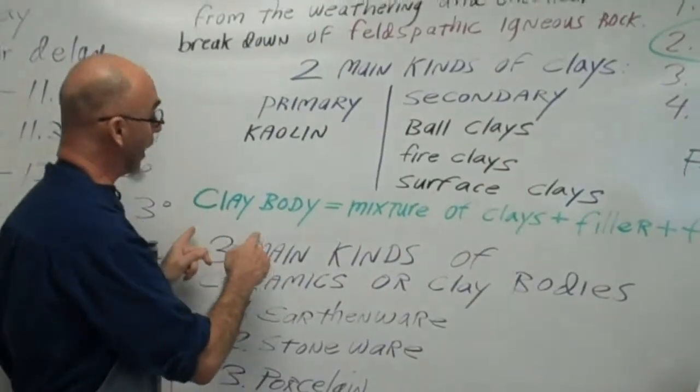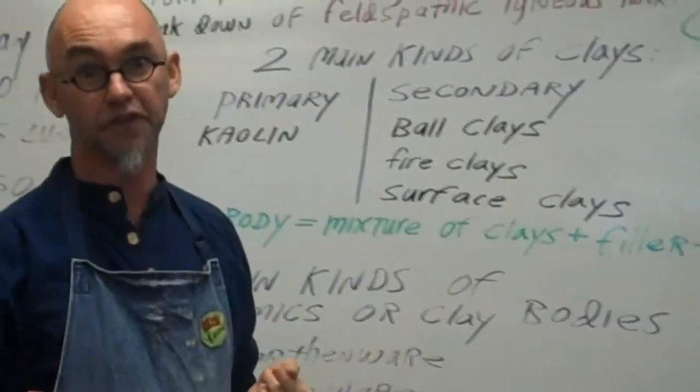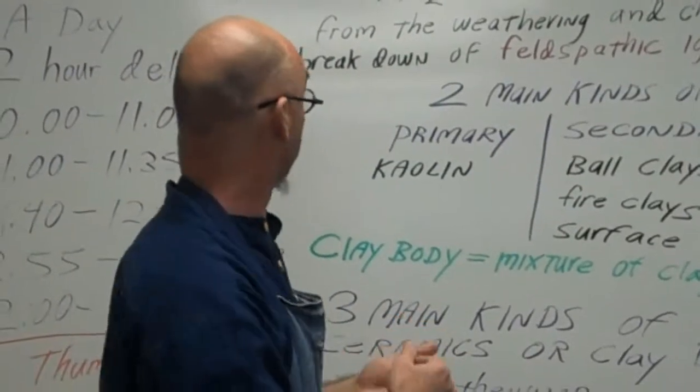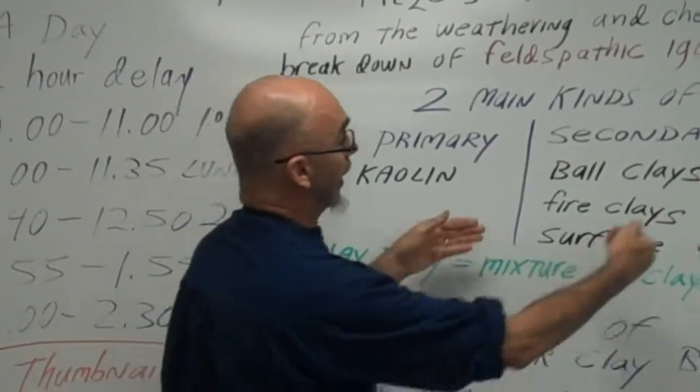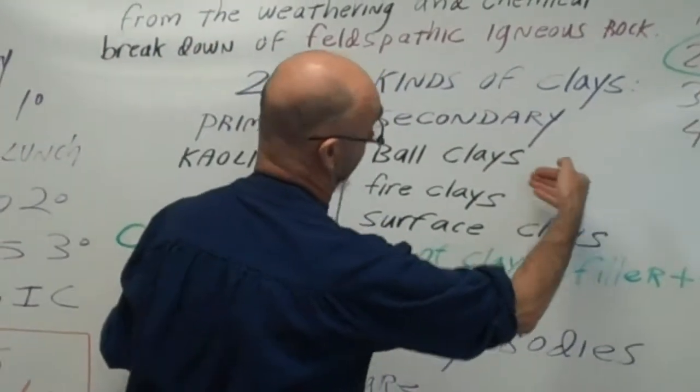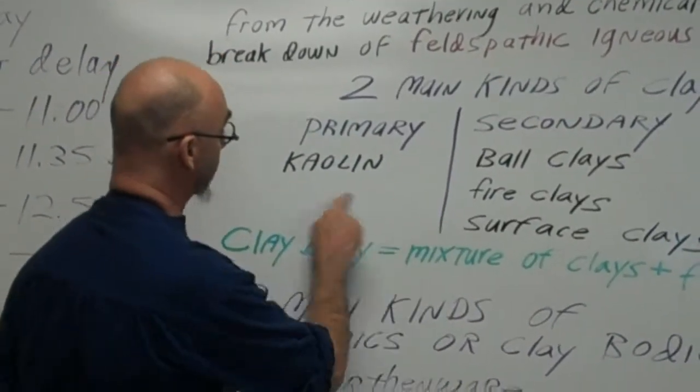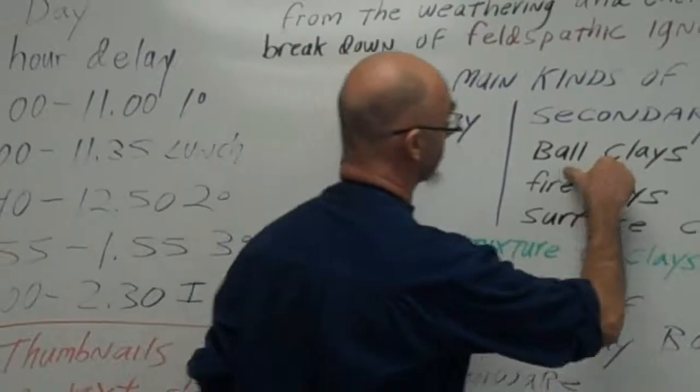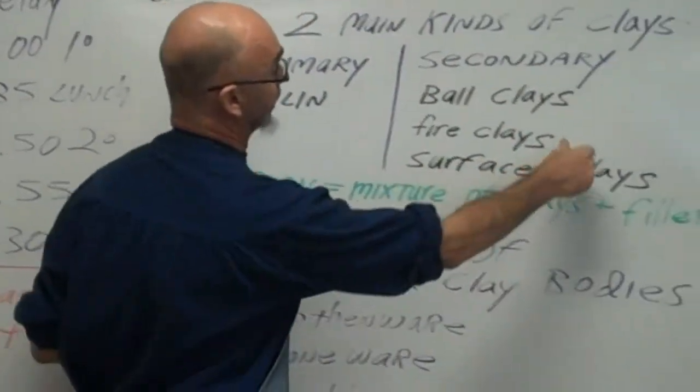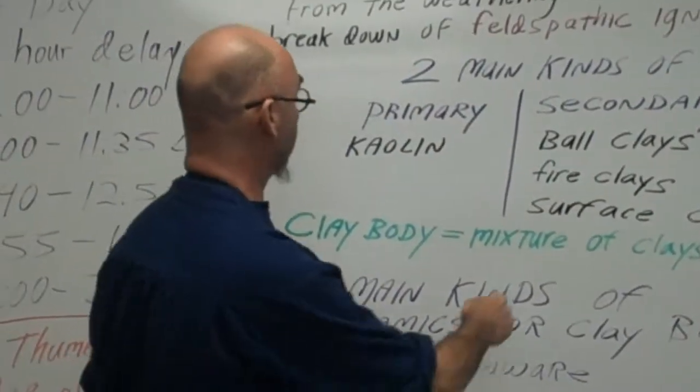As it turns out, really all the clays we use are clay bodies. They're mixtures of clays. So they'll have some primary clay, sometimes a combination of secondary clays. Our stoneware body that we use, our main stoneware bodies, have some kaolin to give it body, some ball clay to make it plastic, and some fire clay to keep it from cracking.